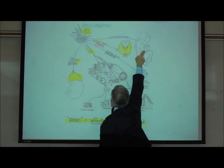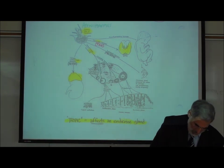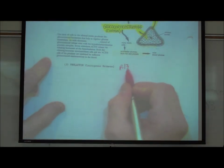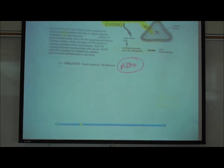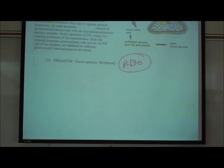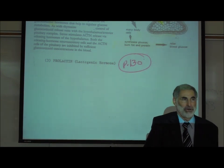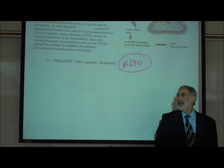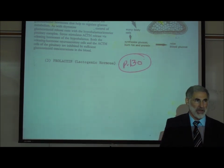There is growth hormone and prolactin. Prolactin is actually mentioned on the bottom of page 130. It is also known as lactogenic hormone. Lacto means milk. The sugar that is in milk is called lactose. If a woman is producing milk, we say she is lactating. So prolactin is the hormone that stimulates the production of milk in the mammary glands.